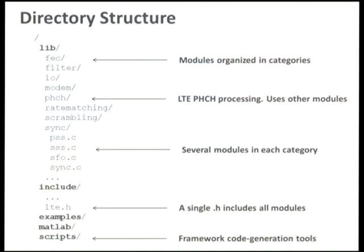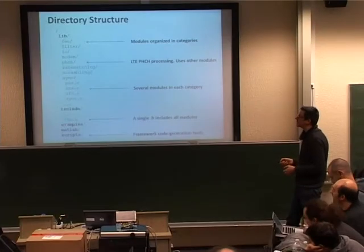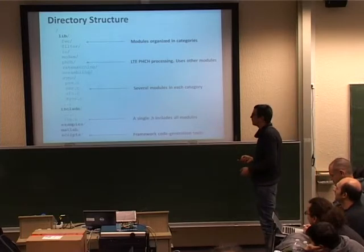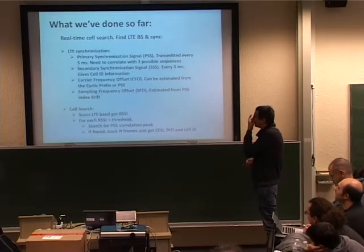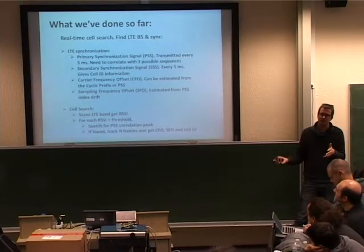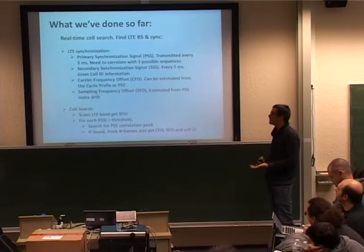This is the directory structure of the library. We organize the blocks in categories, and there is a single .h file that programs using this library need to include. What we've done so far: we implemented a real-time cell search program that scans an LTE band and looks for base stations, and synchronizes with them. If we're lucky, we will try to find some LTE base stations in the demo — I don't know if we'll find some.